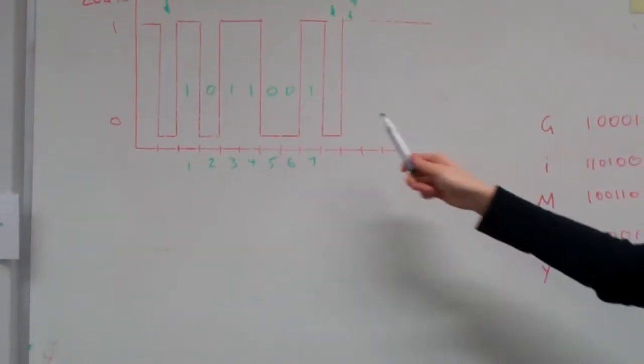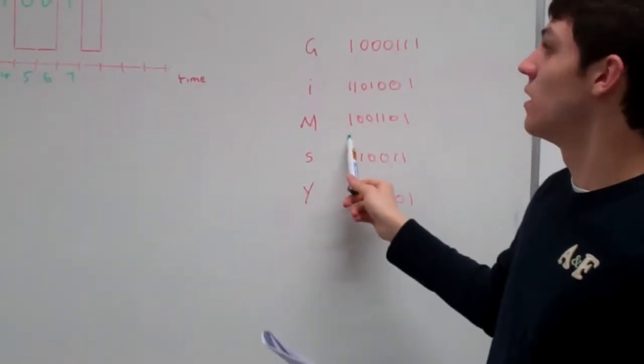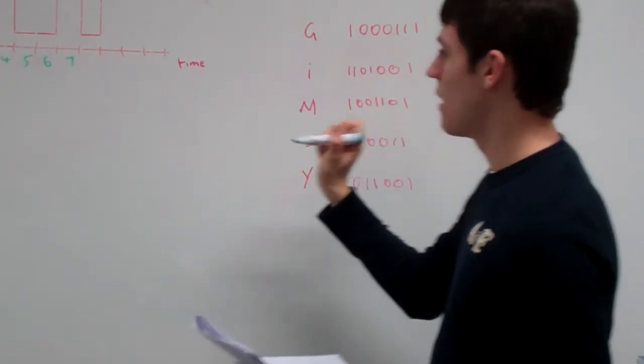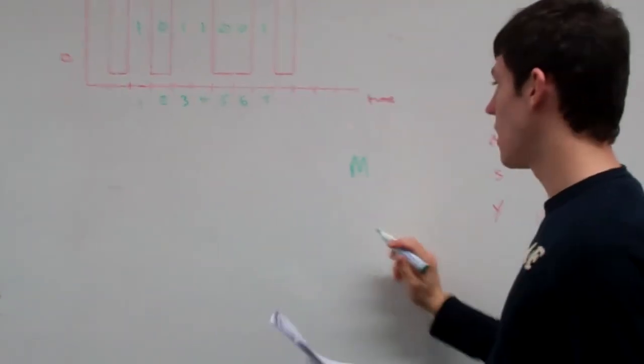Looking back in our table, the data that goes 1, 0, 0, 1, 1, 0, 0 is M. So the answer to the second part is M.